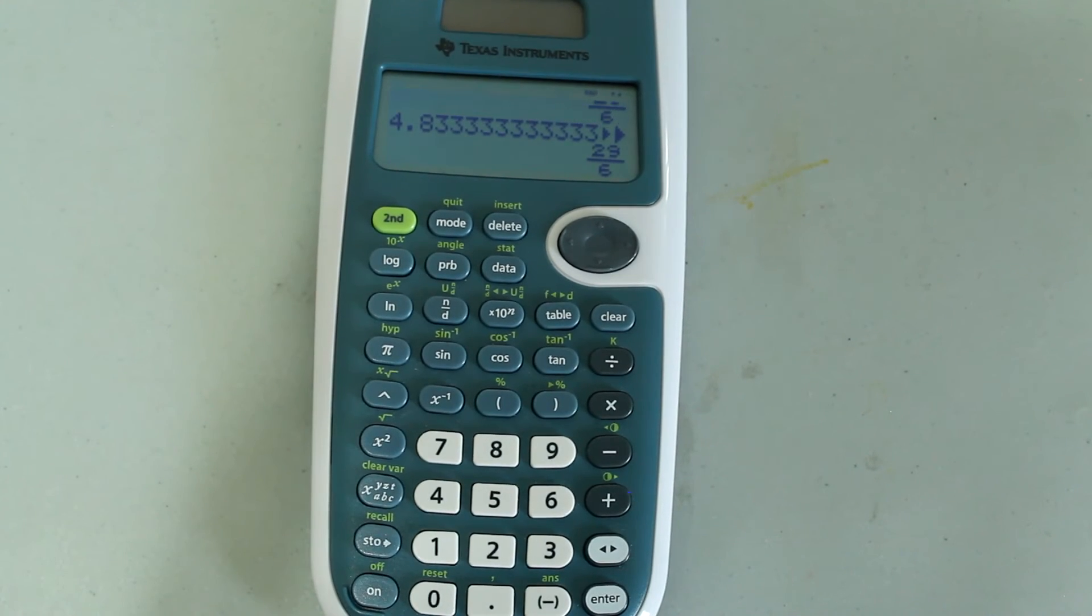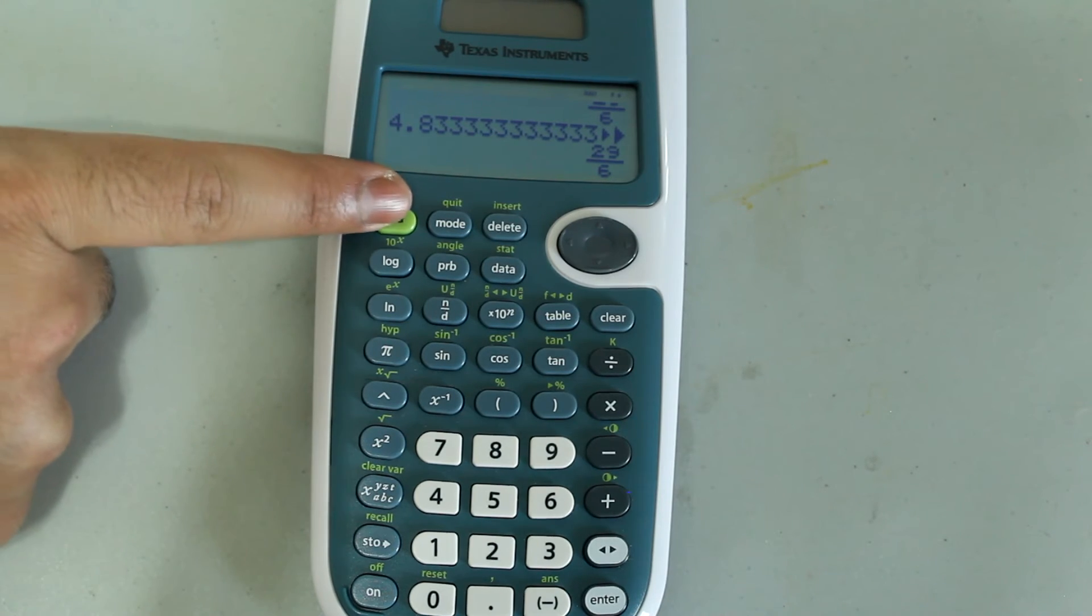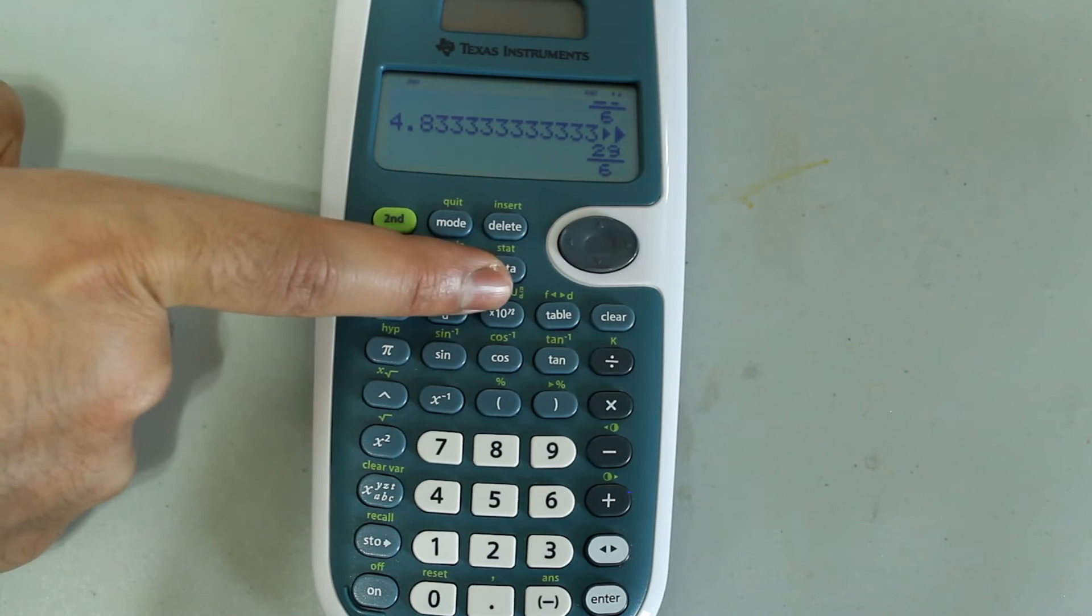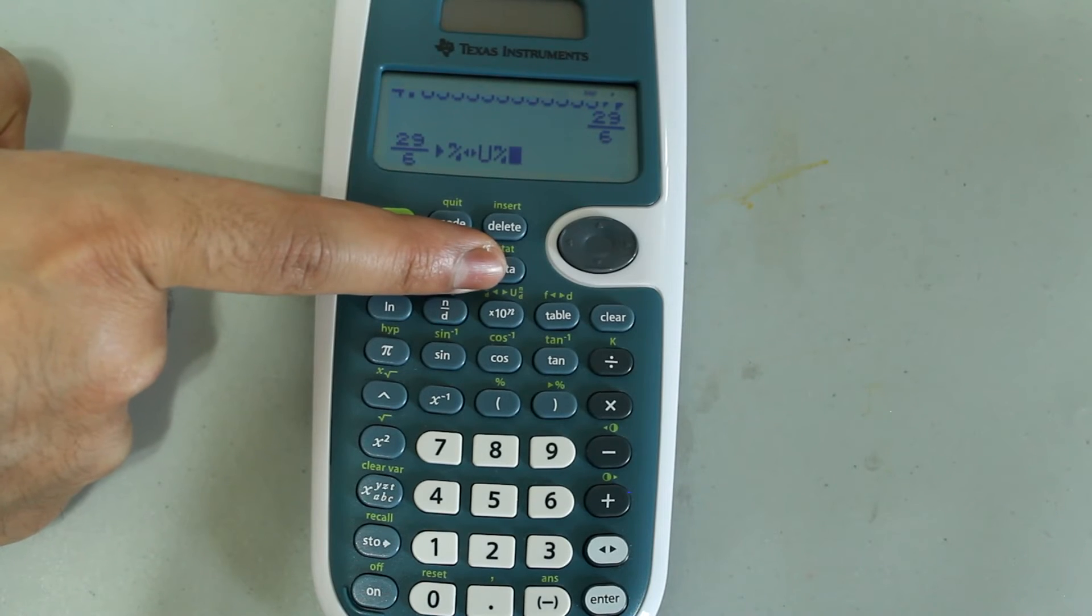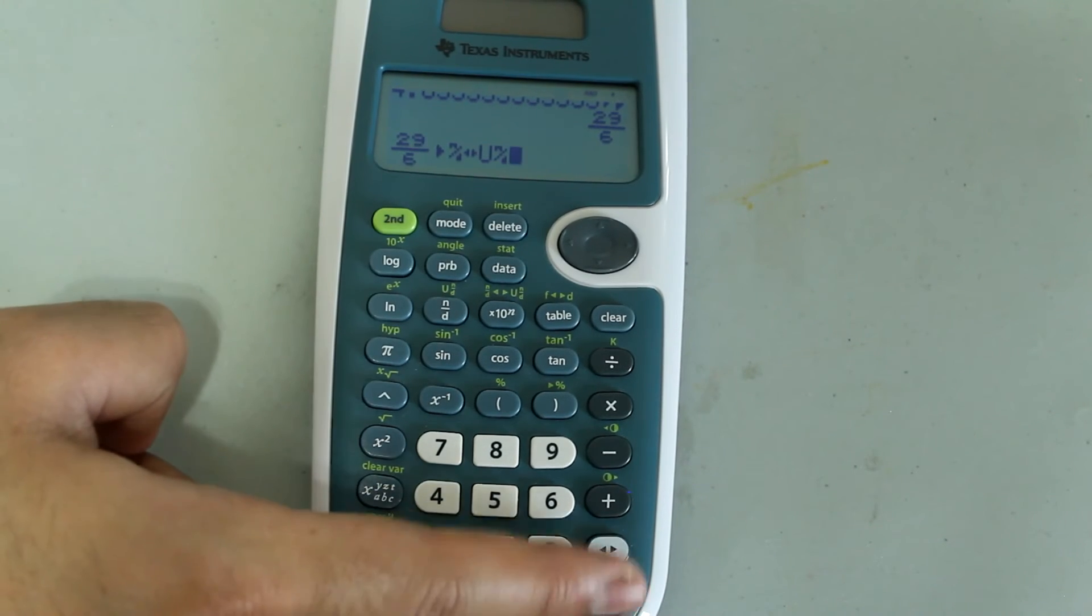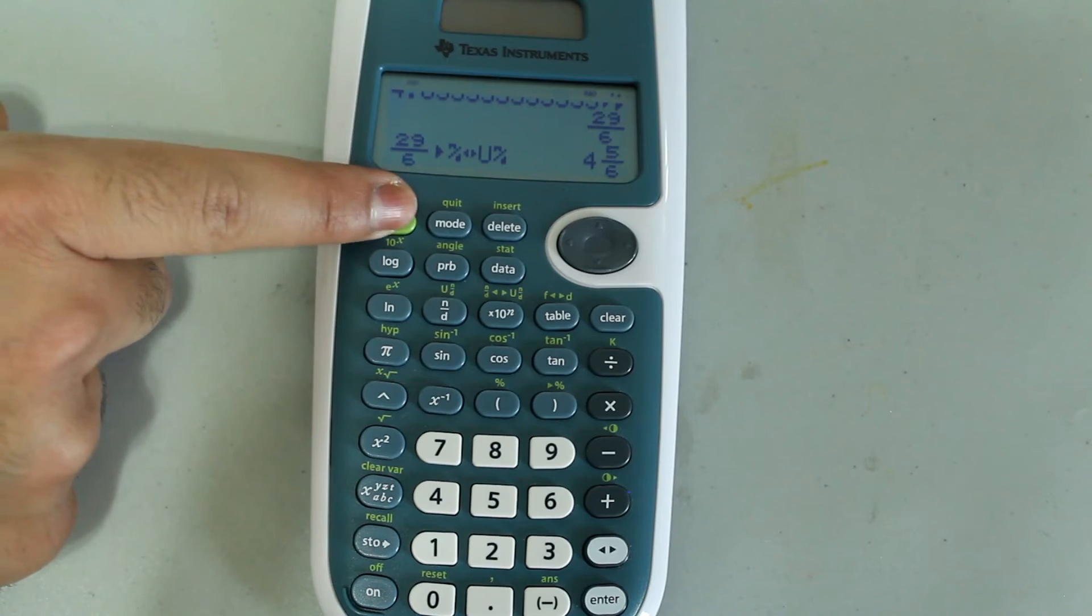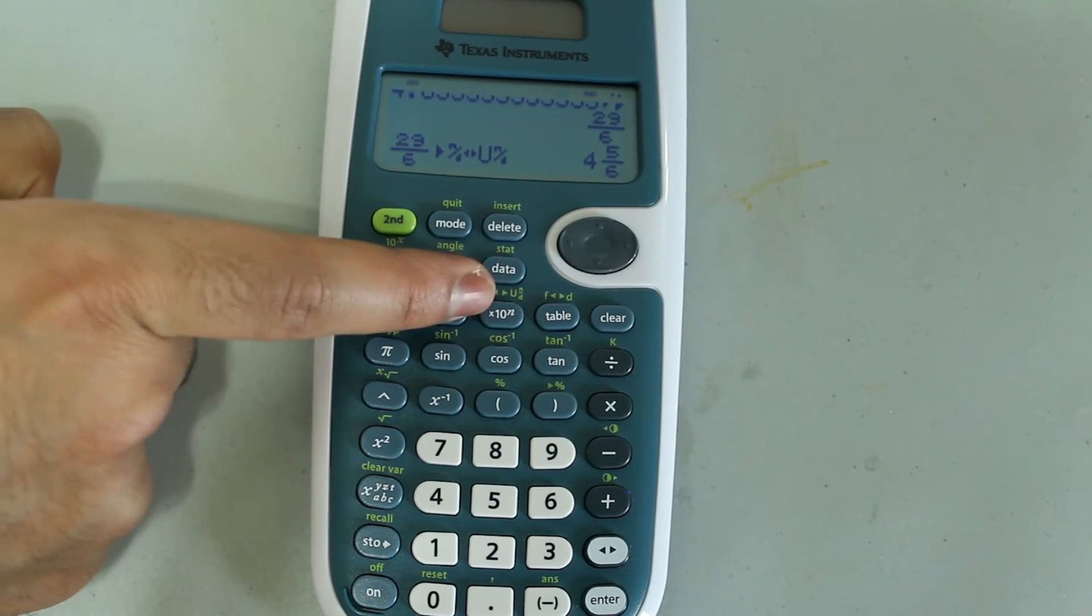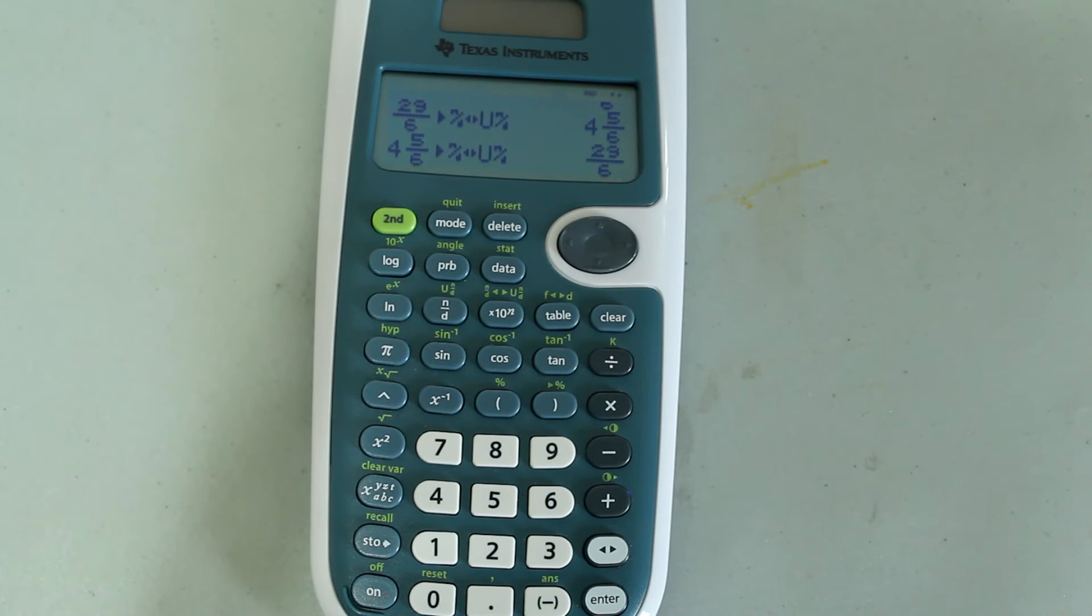And if I wanted this improper fraction to be converted to a mixed number, all I would do is press second and the times 10 to the end button to select the conversion from proper fraction to mixed number and vice versa. So press enter. And from this mixed number, if I wanted to go back to the proper fraction, once again, just press second and times 10 to the end button, and I'll go back to the improper fraction form.